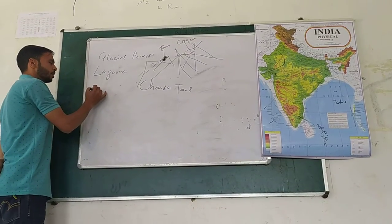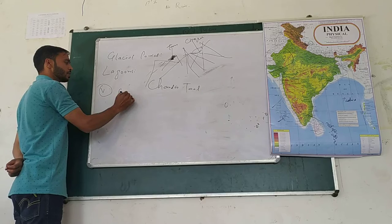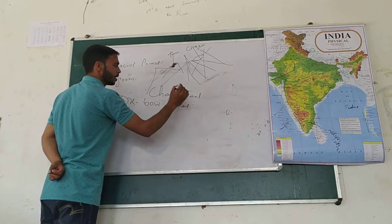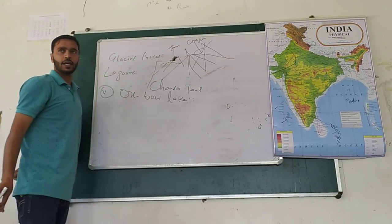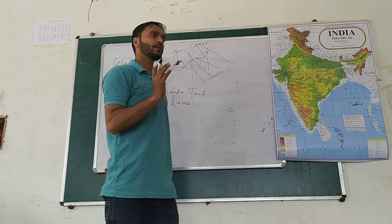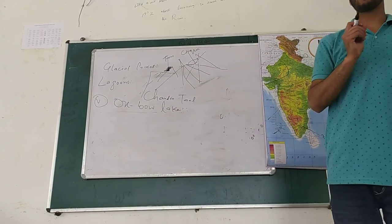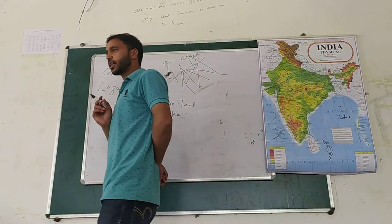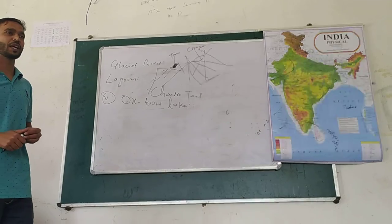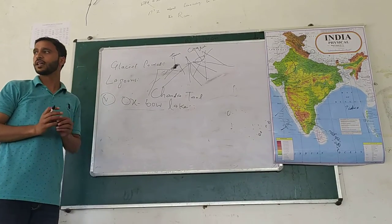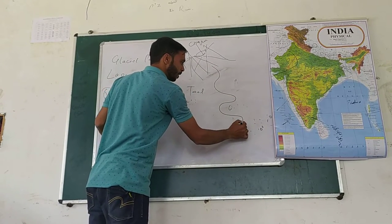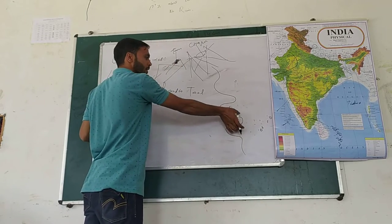The fifth one is oxbow lakes. Oxbow lakes — the word 'oxbow' represents why it is called an oxbow lake. Are you right here? Like, is that an example you are aware of? What do you say?